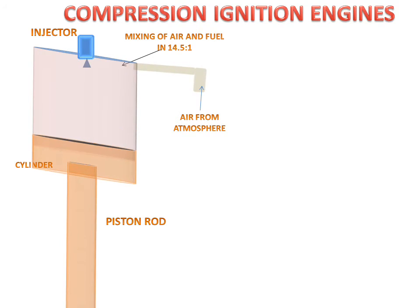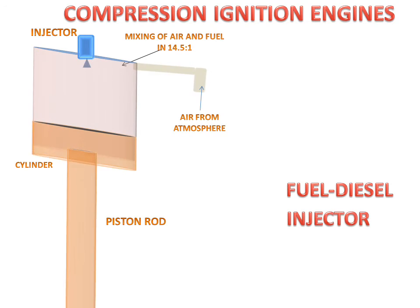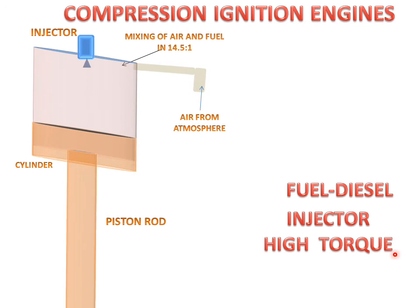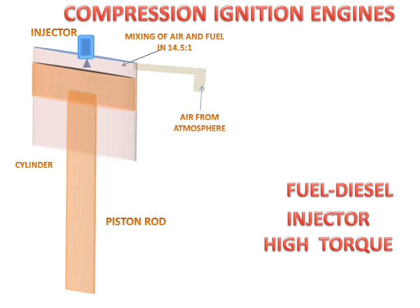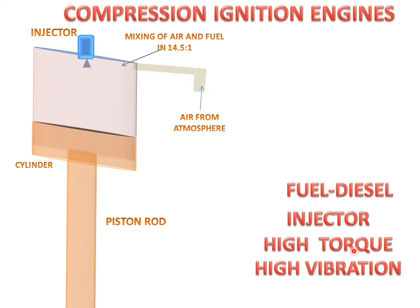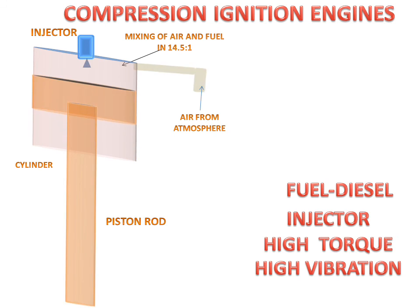The components of the CI engine: the fuel used is diesel, and an injector is used for injecting the fuel. It produces high torque because of the large engine cylinder size. Due to the high size and high torque, it also has high vibration. These are the components and differences between the SI engine and CI engine.